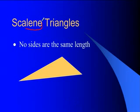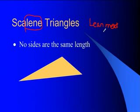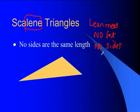For a scalene triangle, remember the word 'lean' — lean meat means no fat, which means no sides are the same length. If you look at a scalene triangle, you can see that all the sides are different lengths.